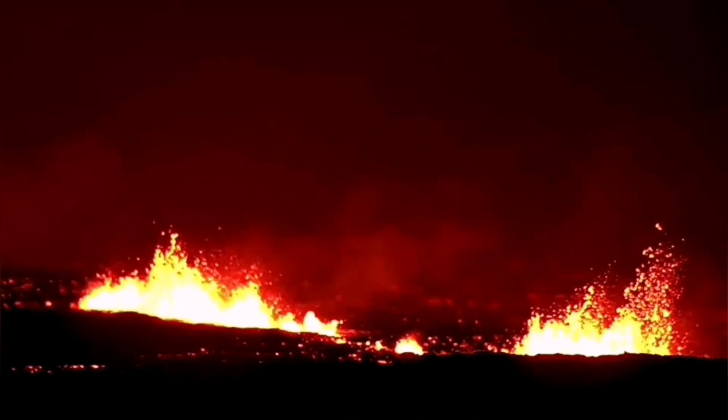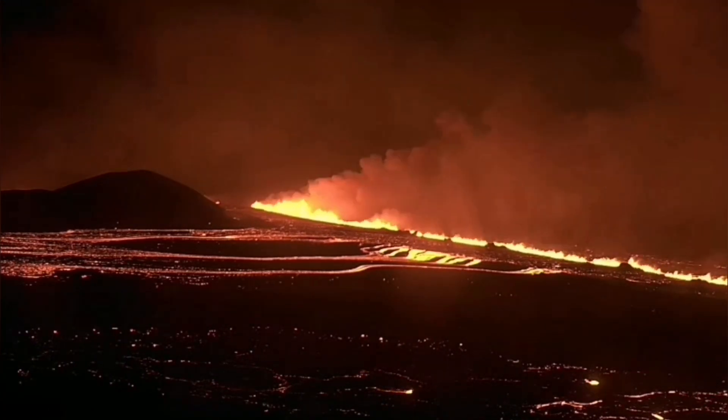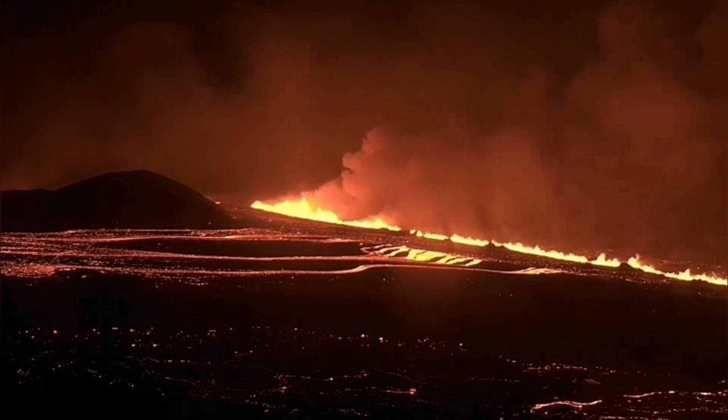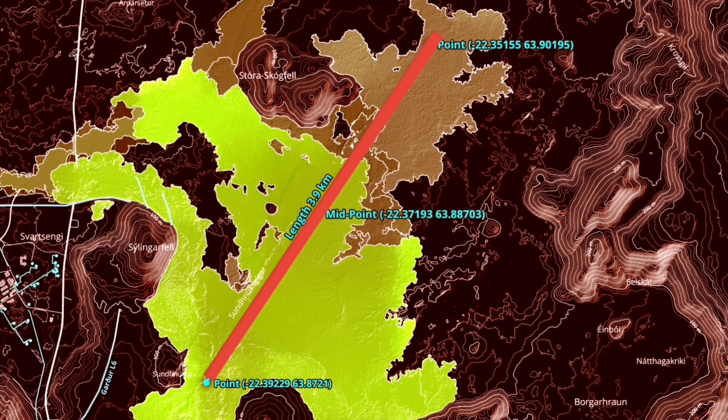Within the next hour, the fissure opened up to 3.9 kilometers — almost 4 kilometers — and the lava started to flow toward the lowland, toward the Schwarzsenge. You can see the change in slope here. It has now almost reached the road to the Grindelbeck, which is the road to the north of the Schwarzsenge geothermal power plant. The arrow shows the direction of movement — it may cut the road at any moment.